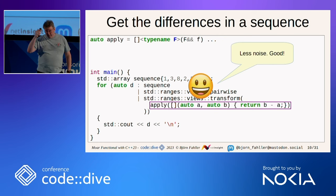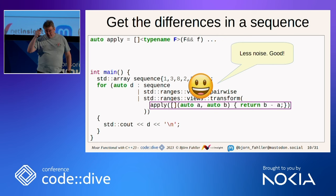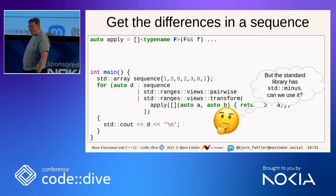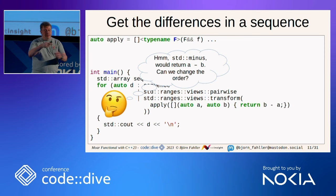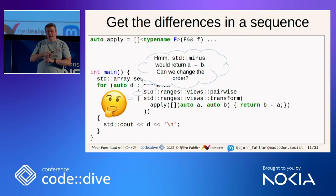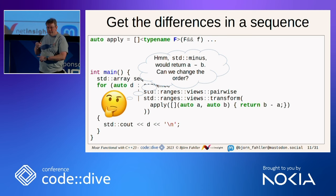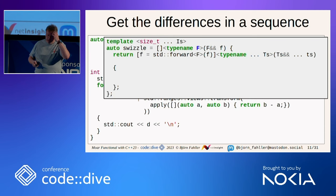But I cannot help but wonder — the library has `std::minus`. Can we use `std::minus`? Naively, just plugging `std::minus` there would return a minus b, which is the exact opposite of what we want. Is there a way to rearrange the order of arguments in a function call? I don't know of any in the standard library, so I created one.